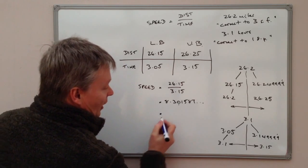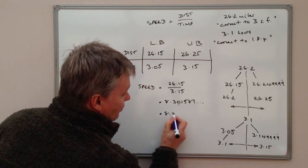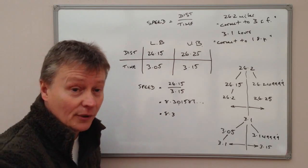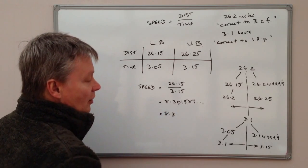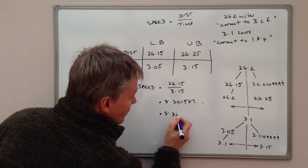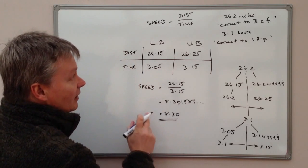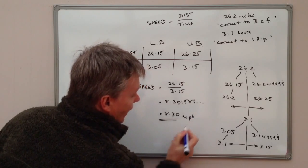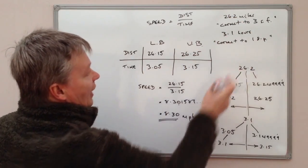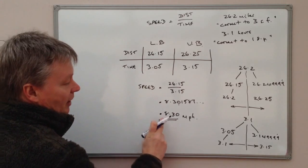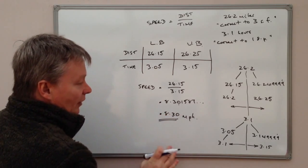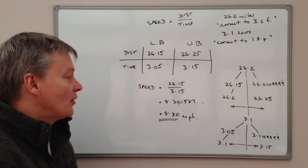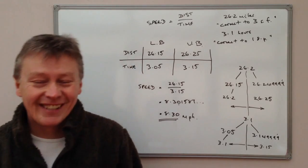So the second decimal place is zero. So to two decimal places it would be 8.3. Now I look at the zero and then I look at the next number afterwards which is 1. So in other words the zero remains the same. So the speed, which is going to be miles per hour, the least possible value of the speed would be 8.30 miles per hour to two decimal places.